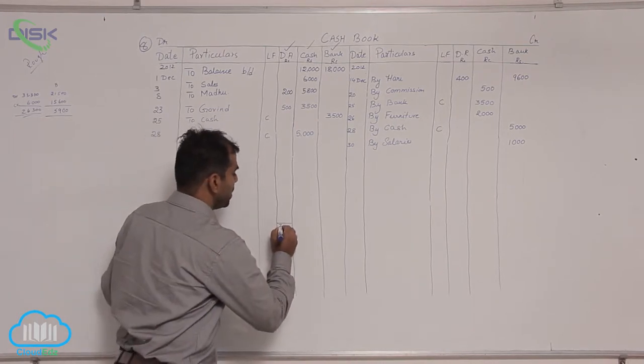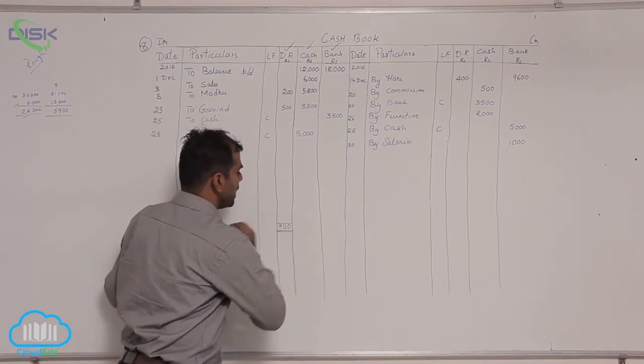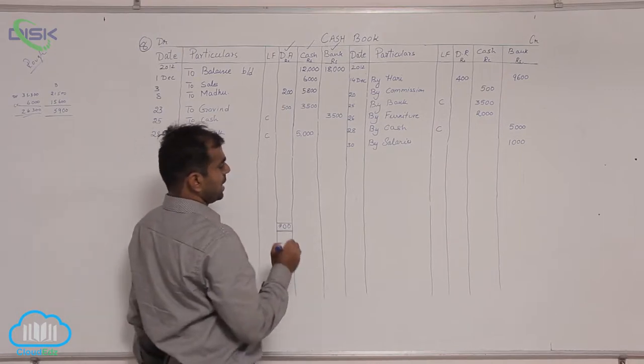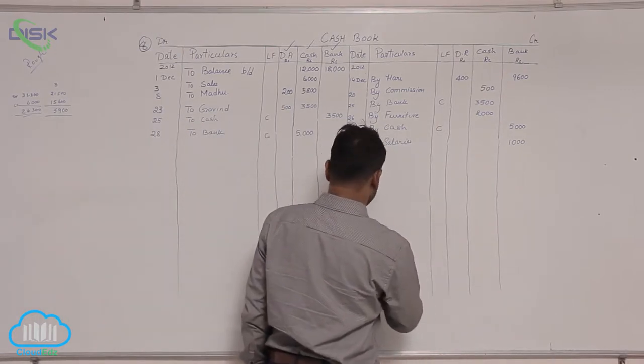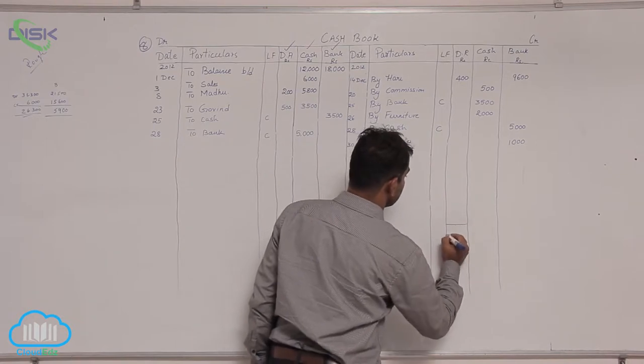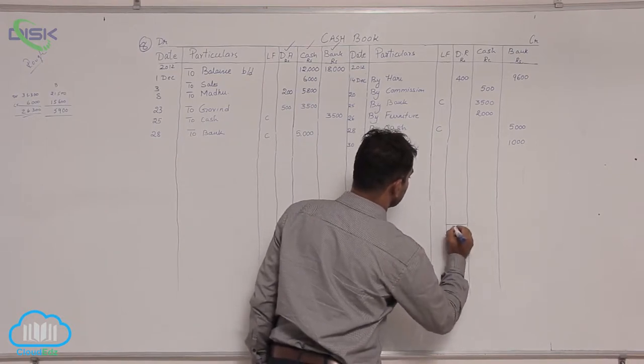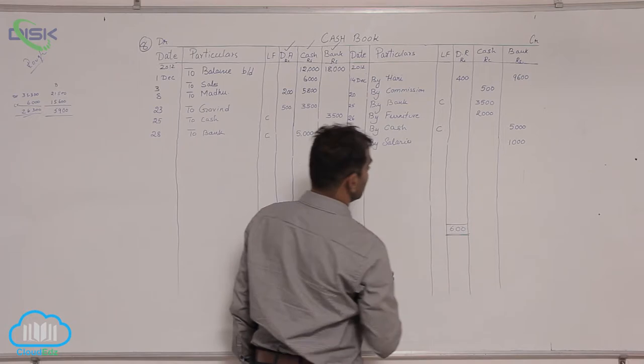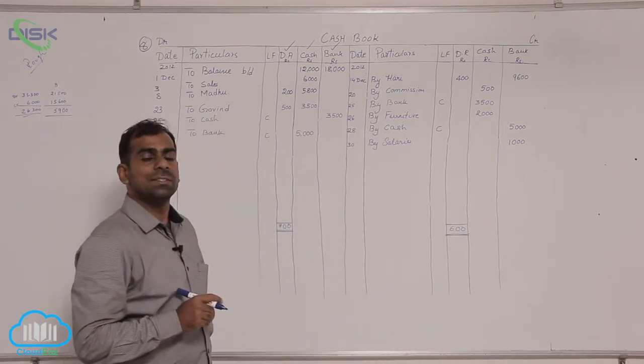So on debit side we have discount allowed total 700. Now moving on to the credit side we have discount received, so it is 600. Now that is how we close our discount columns.